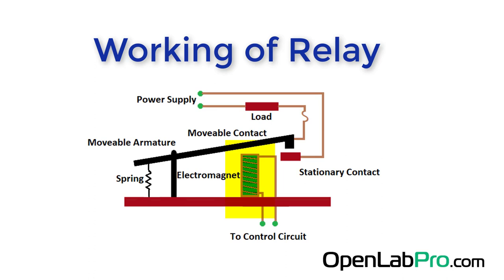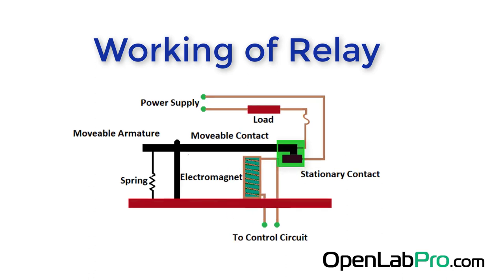It builds the magnetic field. Thus, the upper contact arm starts to be attracted to the lower fixed arm, and thus closes the contact, causing a short circuit for the power to the load.